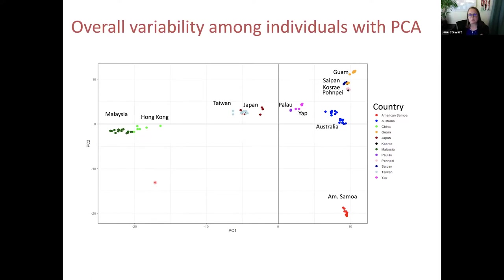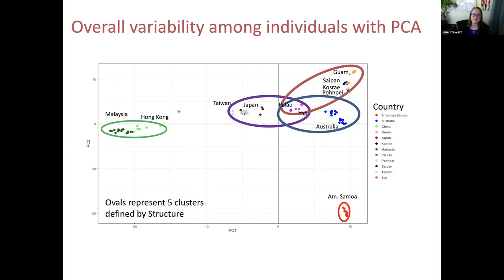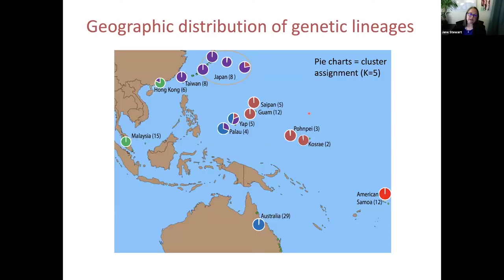We then did PCA labeled by country, showing a strong cluster for Malaysia and Hong Kong, with other countries separating out nicely except Japan and Taiwan. Overlaying the five populations from the structure analysis, we have five different clusters with some isolates sharing genetic material. Mapping this back geographically, there is a northern group made up of purple and green, a group of blue and purple with some mixing, primarily red in another region, and then the bright red American Samoa population — which remains really distinct from the rest.